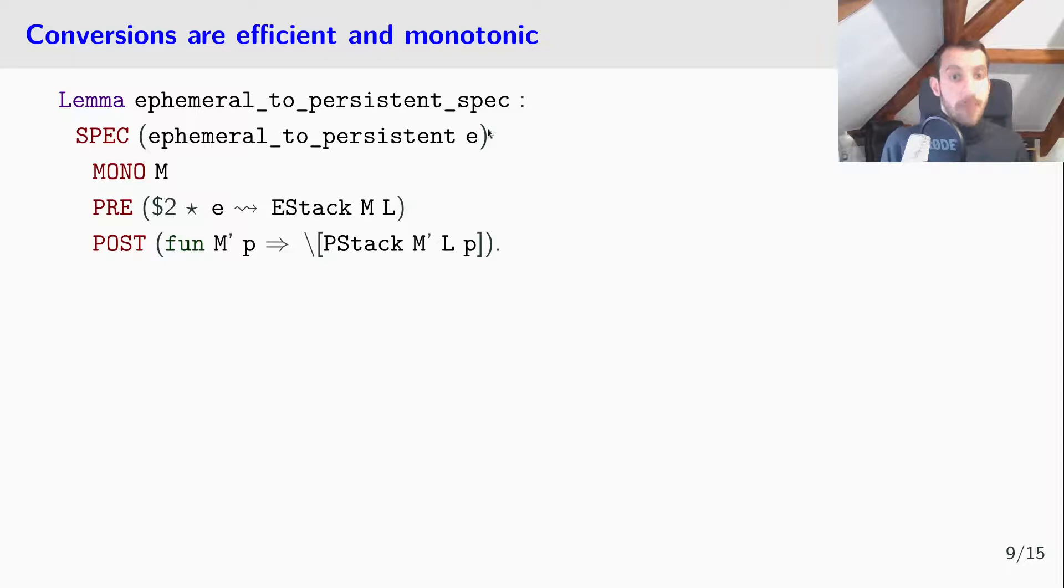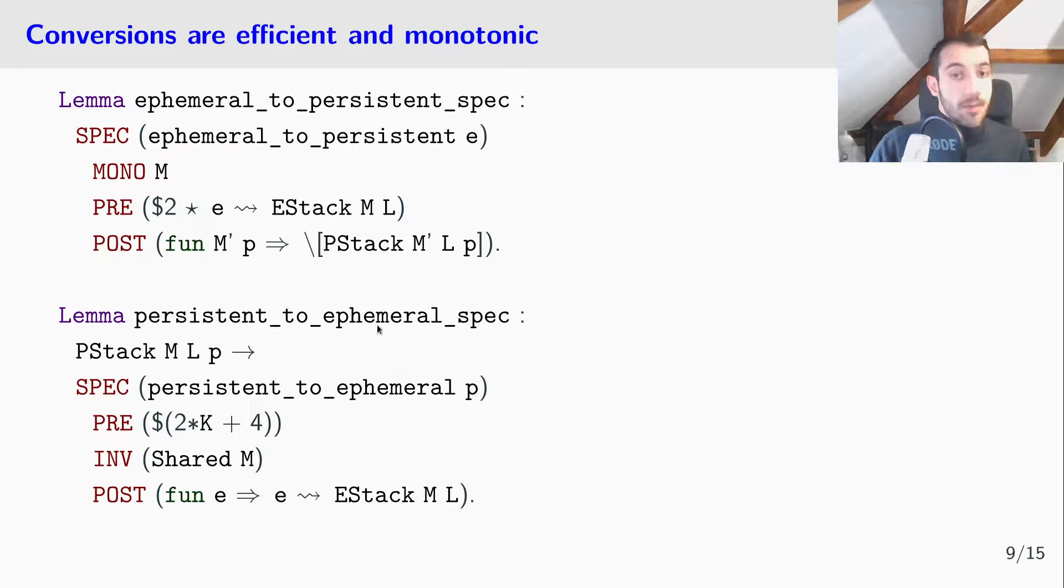In the other direction, we can go from persistent to ephemeral. So, if we have a persistent stack p, we can use persistent_to_ephemeral on p and obtain a new ephemeral stack e, which represents the same stack. We require in the precondition a higher but still constant number of time credits to account for some copies, but we are invariant in the shared memory.